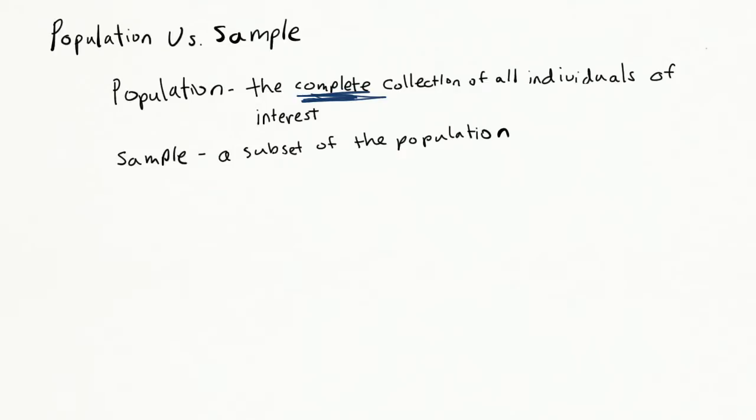For example, an individual may be a tree if we were interested in measuring tree heights in a particular forest. Next, what is a sample? A sample is a subset from the population. It is part of the population. Hopefully it is a randomly selected part.